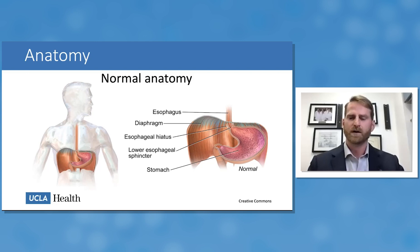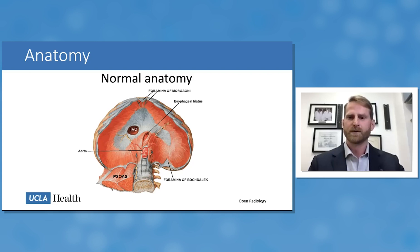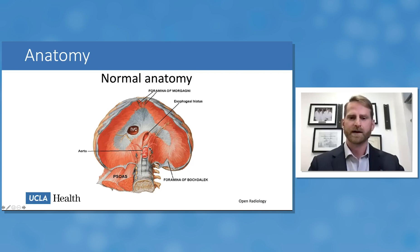The hiatus sits about where you see in this image and is usually relatively small, allowing just the passage of the esophagus. This is a view of the diaphragm looking from the abdomen up towards the chest. The esophageal hiatus is labeled in the center of the image, sitting immediately anterior to the aorta. The right crus inserts to the right of the aorta and the left crus inserts to the left.